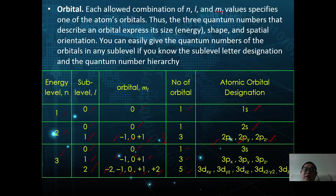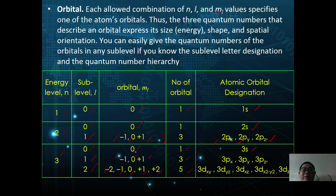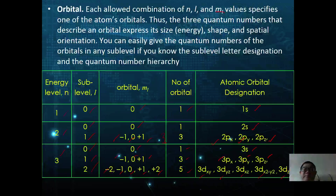For energy level n equals 3, the third shell has three sub-levels: l = 0, 1, and 2. l equals 0 has 1 orientation, l equals 1 has 3 orientations, and l equals 2 has 5 orientations (ml = minus 2, minus 1, 0, plus 1, plus 2), giving 1, 3, and 5 orbitals respectively. The atomic orbital designations are 3s; 3px, 3py, 3pz; and 3dxy, 3dyz, 3dxz, 3d(x²-y²), and 3dz².